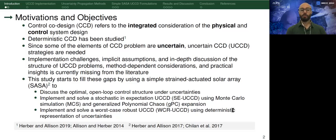In this work, we fill some of these gaps by using a simple strain-actuated solar array system to discuss the optimal open-loop control structure under uncertainties, and to implement two specific specialized UCCD formulations. The first one is the stochastic in expectation UCCD, for which we use Monte Carlo simulation and generalized polynomial chaos for uncertainty propagation purposes. And the second one is the worst-case robust UCCD, which uses deterministic representation of uncertainties.